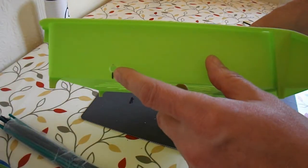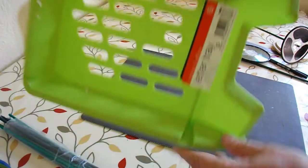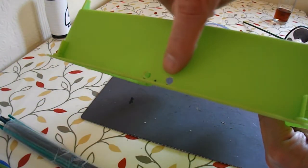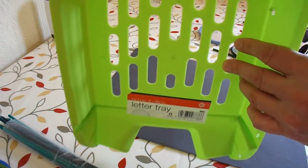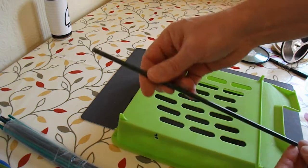Right, drilled my holes for the axles. There, there, there, there, and a couple of holes for the rubber bands to go round the front. I've cut my tube in half.